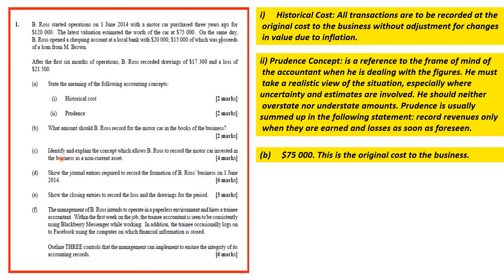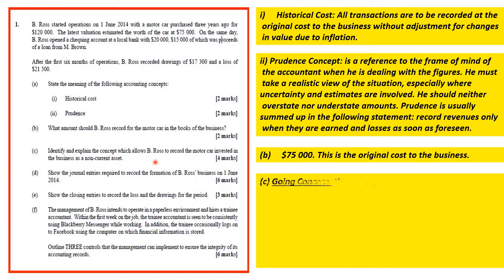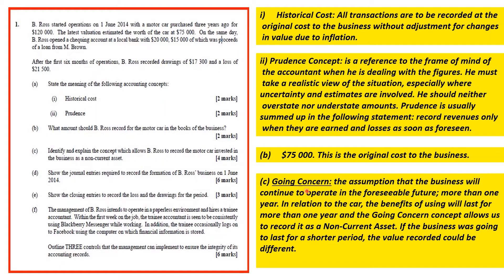Part C: identify and explain the concept which allows B-Ross to record the motor car invested in the business as a non-current asset or fixed asset. That concept is the going concern concept — the assumption that the business will continue to operate in the foreseeable future, more than one year. In relation to the car, the benefits of using it will last for more than one year, and the going concern concept allows us to record it as a non-current asset. If the business was going to last for a shorter period, the value of the vehicle could very well be different.